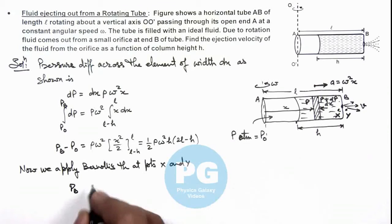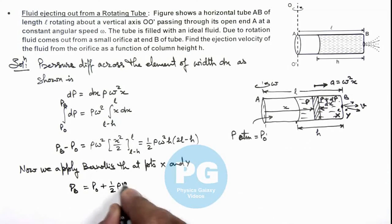So on the right hand side, at point Y we can write pressure is P atmospheric plus kinetic energy per unit volume of the fluid is half rho v squared. So in this relation